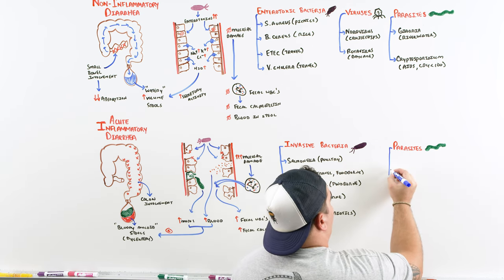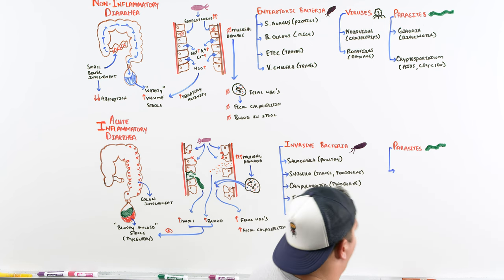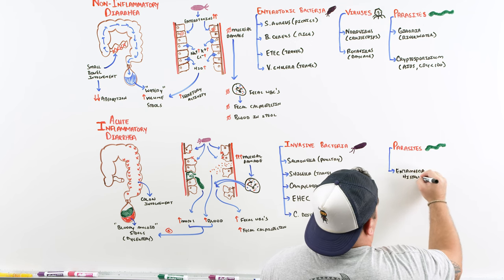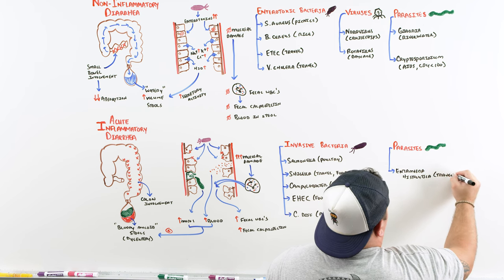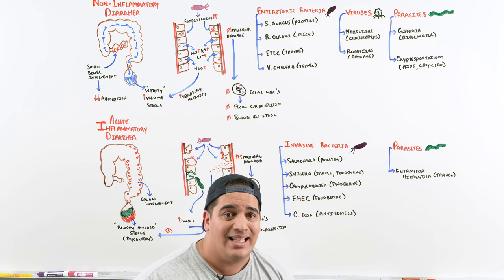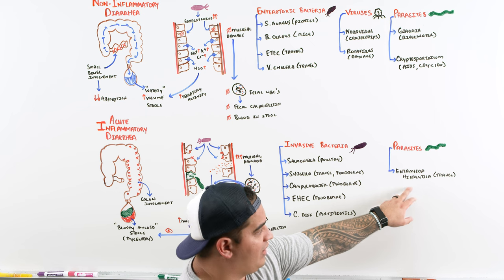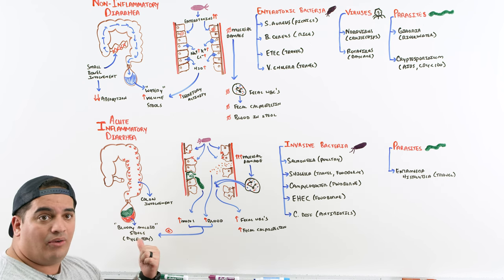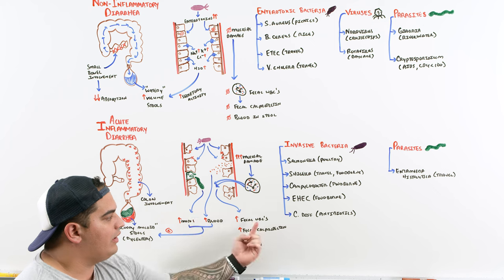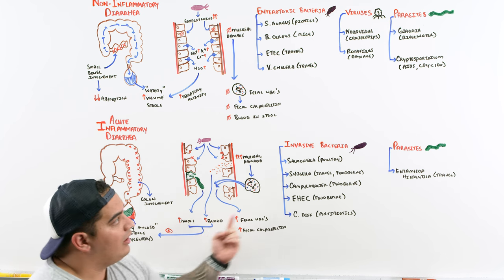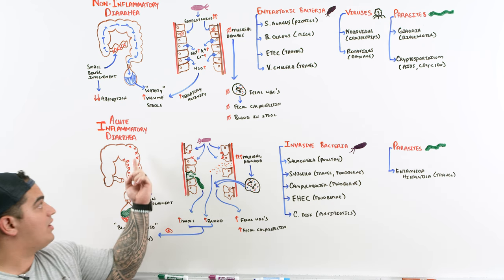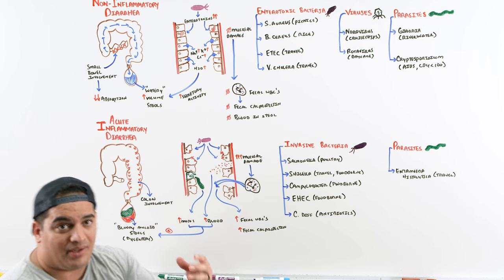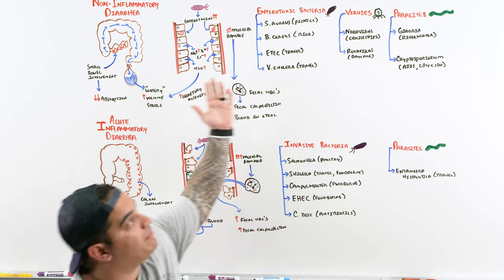For parasites causing acute inflammatory diarrhea, the key one is Entamoeba histolytica — a nasty amoeba typically associated with travel and exposure to contaminated river water. If a patient comes in with mucoid bloody diarrhea, think about blood, fecal WBCs, and mucus, and consider these pathogens with colon involvement.